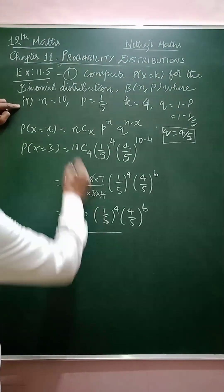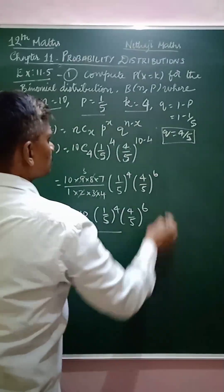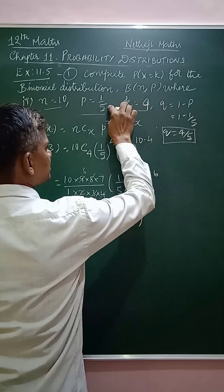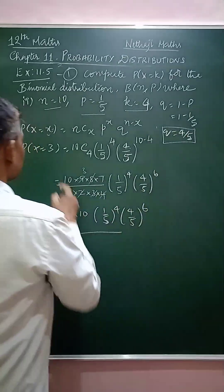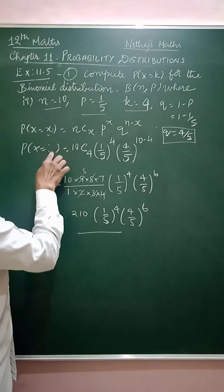In the second problem, n is 10, p is 1/5, and k is 4. First find q: q equals 1 minus p, which is 1 minus 1/5 equals 4/5.